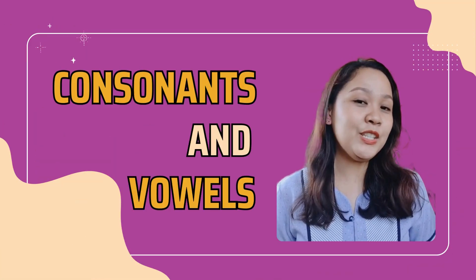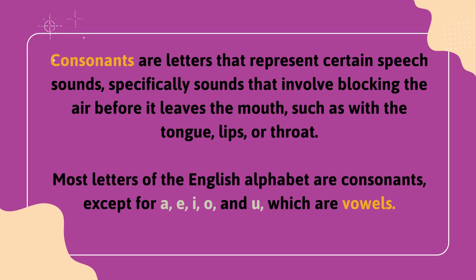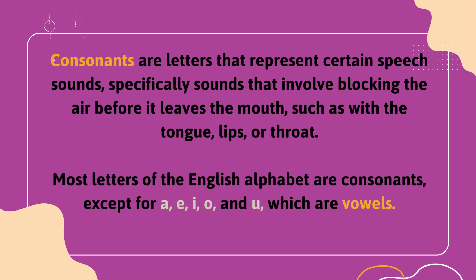Before we dive in, let's understand what exactly consonants and vowels are. Consonants are letters that represent certain speech sounds, specifically sounds that involve blocking the air before it leaves the mouth, such as with the tongue, lips, or throat. Most letters of the English alphabet are consonants, except for A, E, I, O, and U, which are vowels.